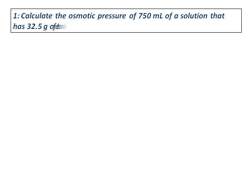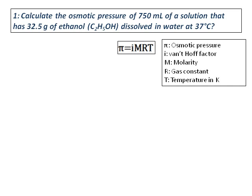Now let's do a question on osmotic pressure. Calculate the osmotic pressure of 750 milliliters of a solution that has 32.5 grams of ethanol dissolved in water at 37°C. The formula for osmotic pressure is π = iMRT.